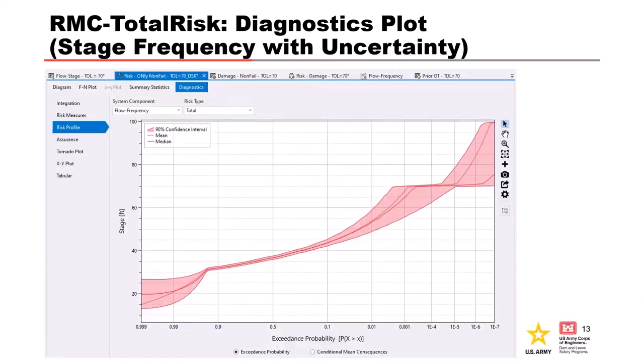In Total Risk, once you set up your input hazard and transform from flow to stage, all you need to do is add some dummy consequences — they don't have to be real. You can put zero to one in some dollar amount or life loss estimate because it doesn't use it to come up with the stage frequency curve; it just needs it to run the analysis. Then you set up an analysis in Total Risk. One of the results it will plot is a stage frequency curve for a particular location based on your input flow frequency with uncertainty as well as your rating curve with uncertainty. This is a really helpful tool for estimating what the actual stage frequency is associated with the 1% event.